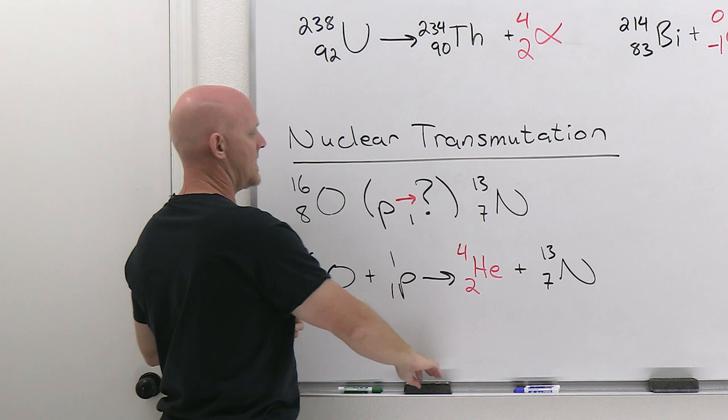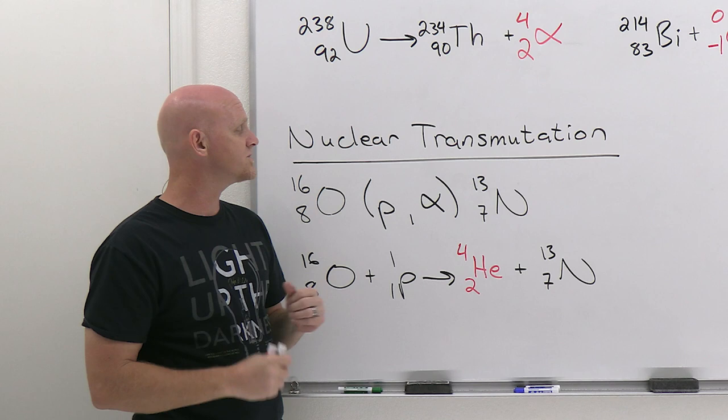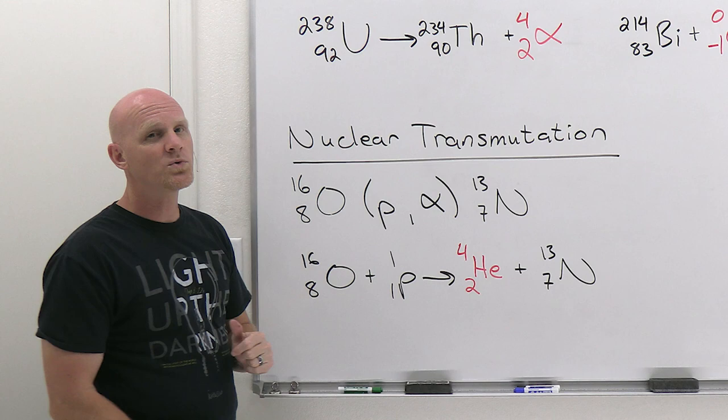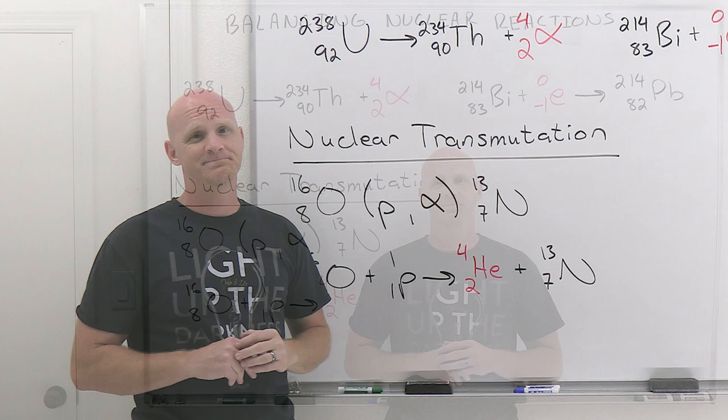Although when you write it with nuclear transmutation shorthand, you have to use the lovely Greek symbol if it has one. And so you definitely have to put alpha in right here instead. And so if you're trying to figure out that mystery particle with the shorthand for nuclear transmutations, it would have been an alpha particle there. So you should understand how this shorthand works for these nuclear transmutations. You'd be able to translate it into an overall balanced nuclear reaction and should be able to figure out what any one of these four might be given the other three.